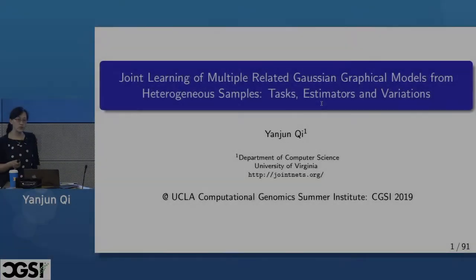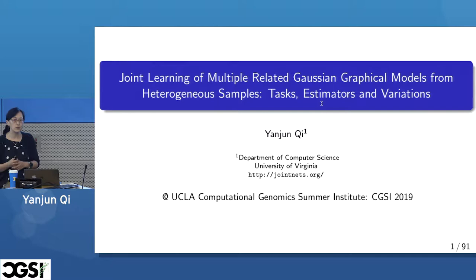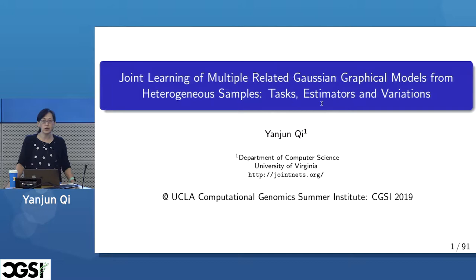I'm Yan Junqi, from the University of Virginia Department of Computer Science. Today I'm going to talk about joint learning of multiple related sparse Gaussian graphical models from heterogeneous samples.